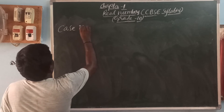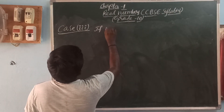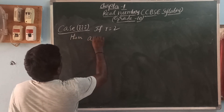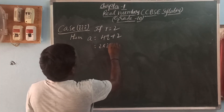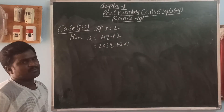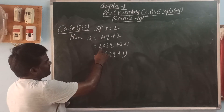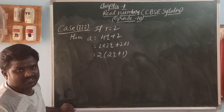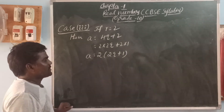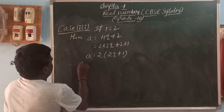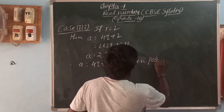Case 3: if R equals 2, then A equals 4Q plus 2. We can write 4 as 2 into 2, so A equals 2 into 2Q plus 2, and factoring out 2 using the distributive property gives 2 of 2Q plus 1. So A is in the form of multiples of 2, and therefore A equals 4Q plus 2 is an even positive integer.